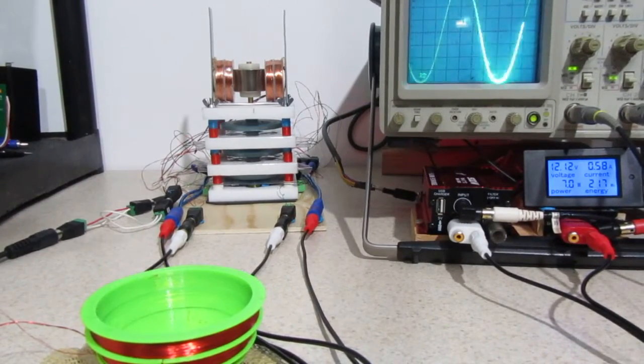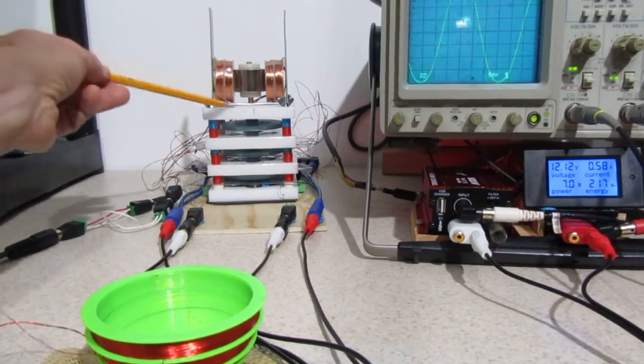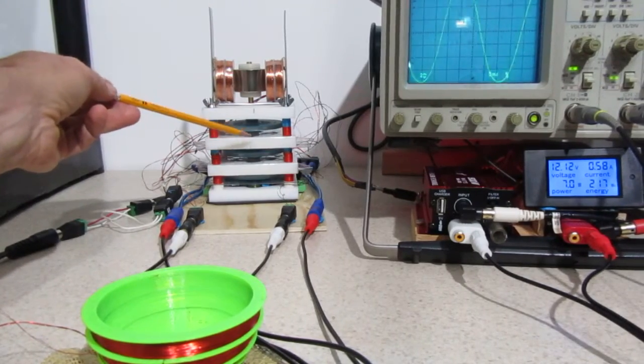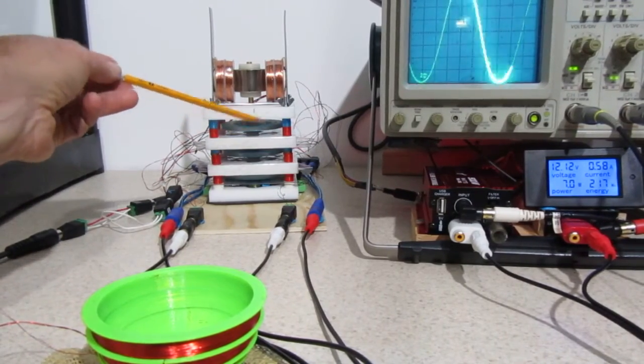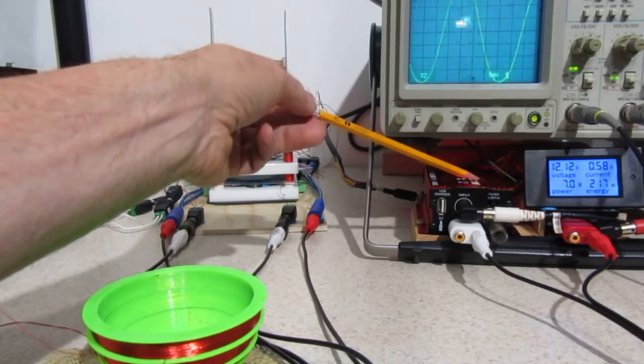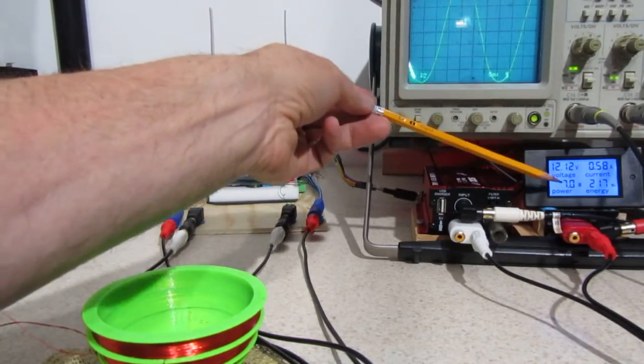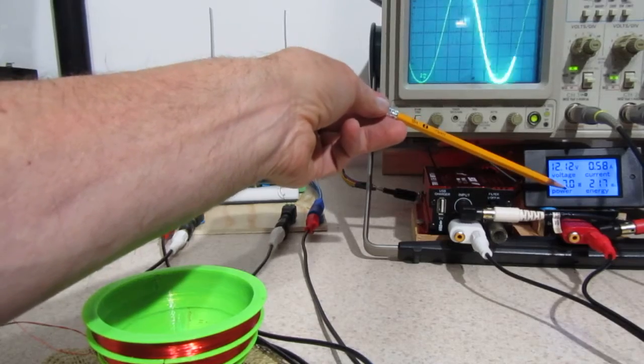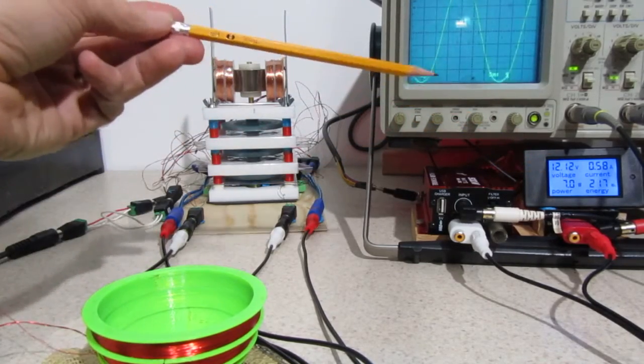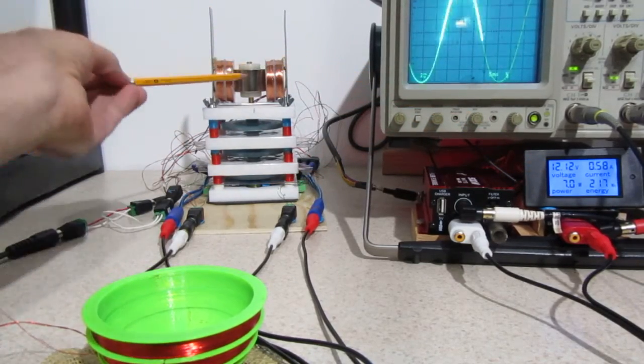Let me describe what we're looking at here. This white object is an electric motor driven by this audio amplifier. It's currently consuming seven watts, which is our baseline for this experiment. The motor turns this magnetic rotor.